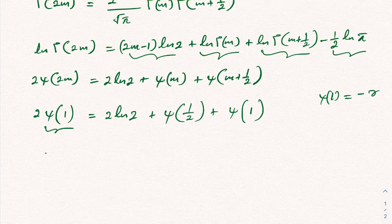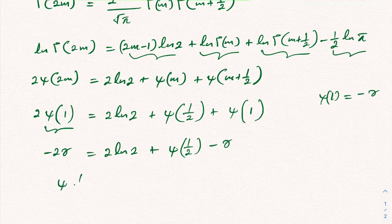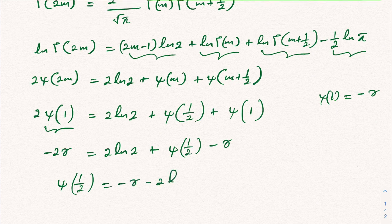So we have: 2 times psi(1) equals negative 2 gamma, and substituting psi(1) equals negative gamma on both sides, we get: negative 2 gamma equals 2 times natural log of 2 plus psi(1/2) plus (negative gamma). Isolating psi(1/2), we find psi(1/2) equals negative gamma minus 2 times natural log of 2. This is the value of digamma of one half. Thank you for watching!